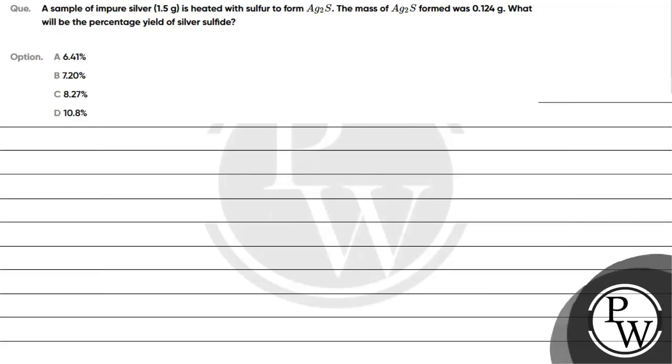Hello, let's read this question. A sample of impure silver 1.5 gram is heated with sulfur to form silver sulfide. The mass of silver sulfide was 0.124 gram. What will be the percentage yield of silver sulfide? Option A: 6.41%, option B: 7.20%, option C: 8.27%, option D: 10.8%.